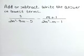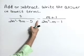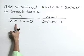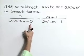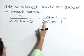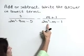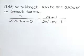Add or subtract? Write the answer in lowest terms. Here we have a subtraction problem: 3 over 2m squared minus 9m minus 5 minus m plus 1 over 2m squared minus m minus 1.